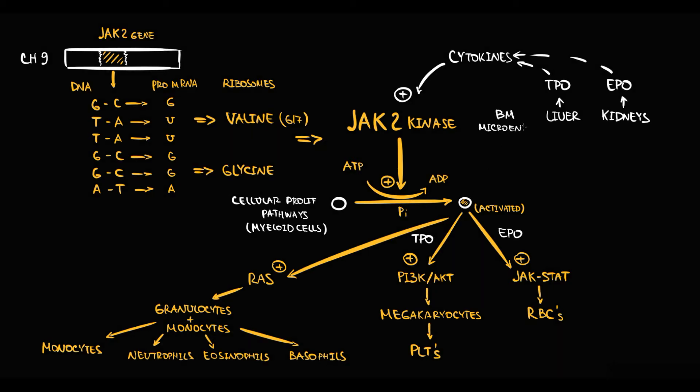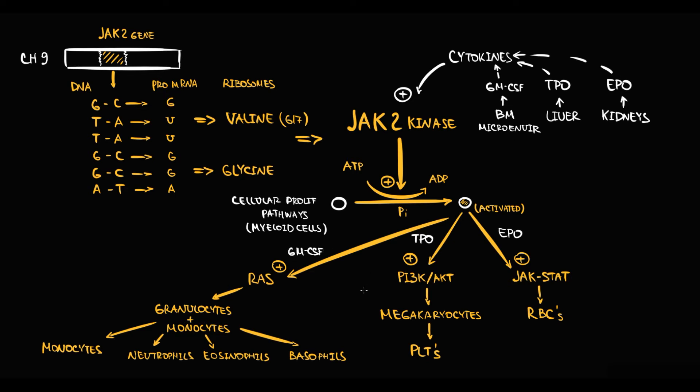The bone marrow microenvironment, by secretion of granulocyte-macrophage colony-stimulating factor, forces JAK2 kinase to activate the RAS pathway, causing an increase in production of granulocytes and monocytes. So as we see, because organs that regulate blood cell count cannot act directly, they secrete cytokines, and cytokines activate JAK2 kinase, which in turn stimulates the cell proliferation rate.